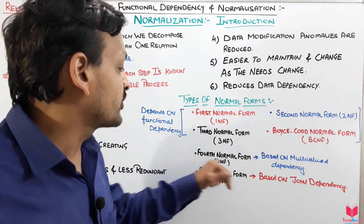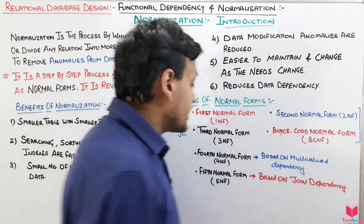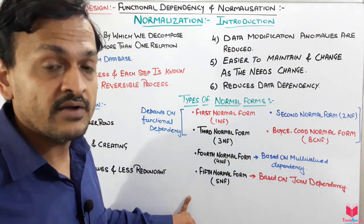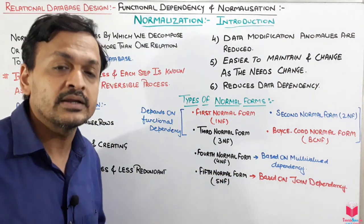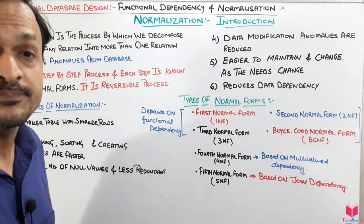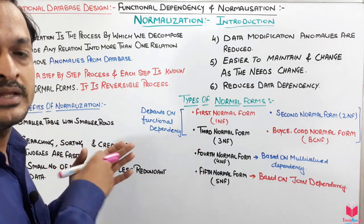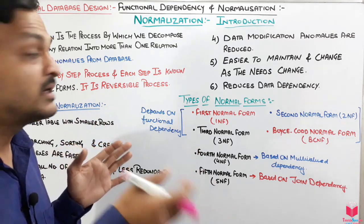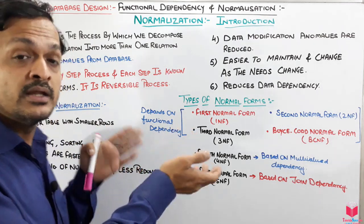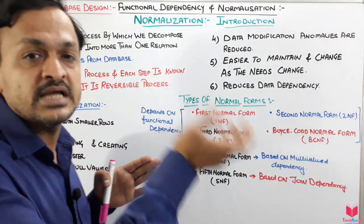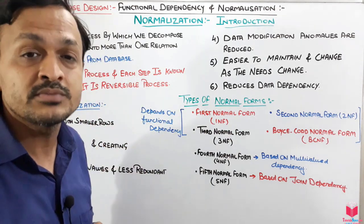After BCNF comes Fourth Normal Form (4NF), which is based on multi-value dependency, and then Fifth Normal Form (5NF), which is based on join dependency. We will study the dependency first and then apply it to the corresponding normal form, step by step — studying the first dependency and applying it to the first normal form, then the second, and so on.